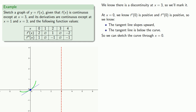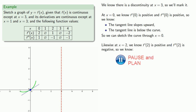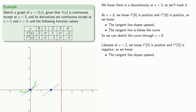At x equals 2, we know that the first derivative is positive and the second derivative is negative. So we know that the tangent line slopes upward and the tangent line is above the curve. We can sketch the curve through x equals 2.